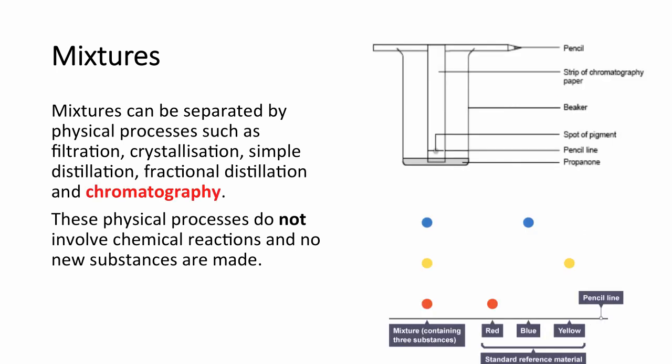Our last separation technique is chromatography. We use a beaker of water and place inside a filter paper. We mark a pencil line and place a spot of pigment or dye. We allow the water to run up the paper and it carries the pigment with it because it is soluble in water. We stop the experiment when the water reaches the top and examine the chromatogram produced. We can see that a mixture has been separated into spots — for example, three spots indicate three substances — and we can compare these to references. If colours travel the same distance, they have the same RF value and are the same substance.